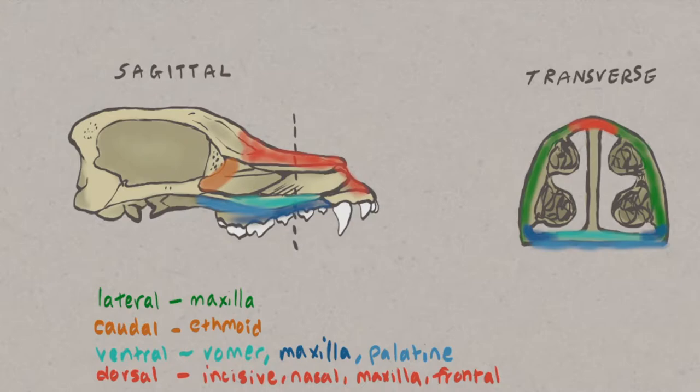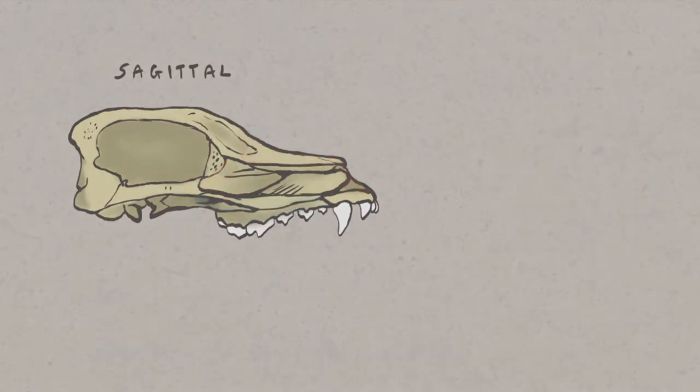The nasal cavity is divided into left and right nasal chambers by a cartilaginous septum. The entrance to the nasal cavity begins at the external nose, which is supported by a cartilaginous frame.